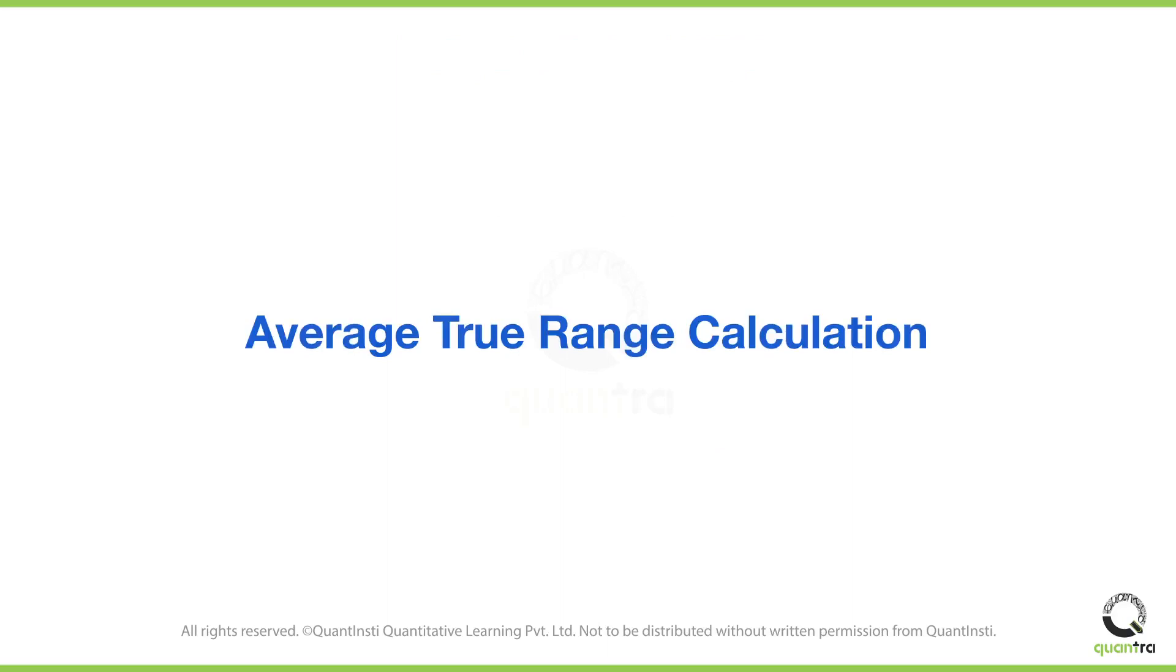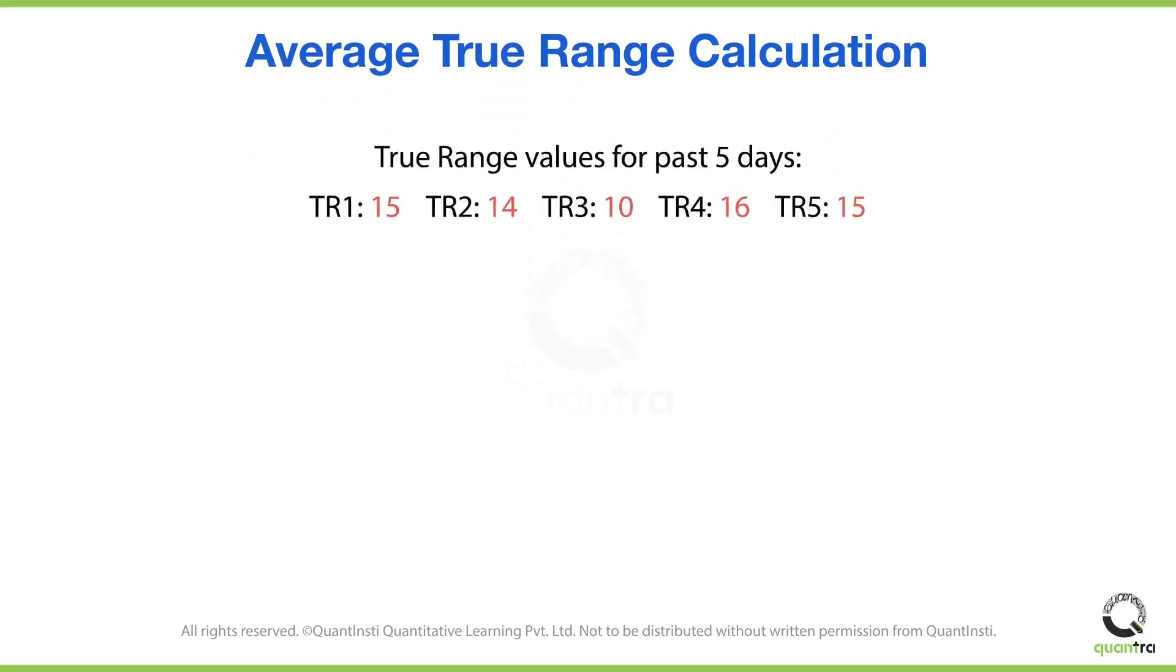Let us now move further and try to understand the calculation of the average true range. Here, as you may have already figured out, we are simply trying to find the average of the true range values for a said number of days. Assuming that we have the true range values for the past five days as shown here, how would you proceed to compute the ATR?